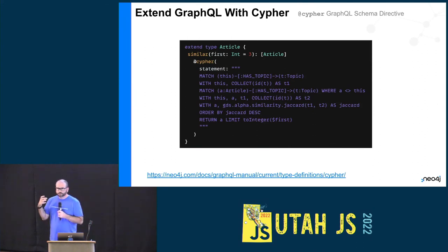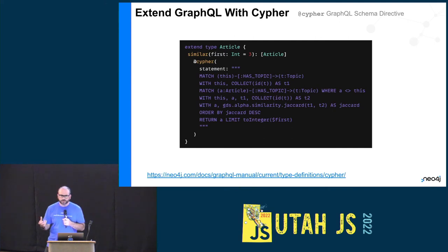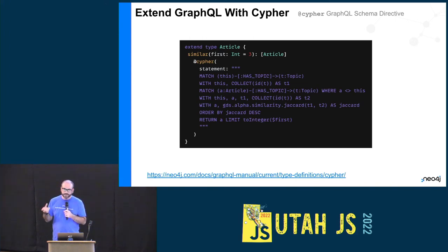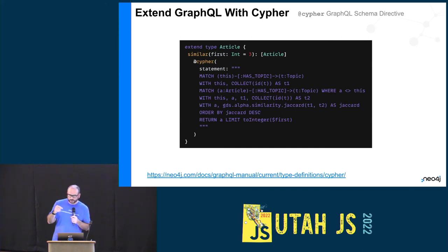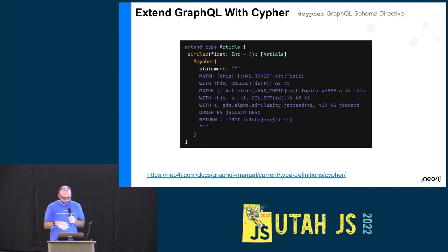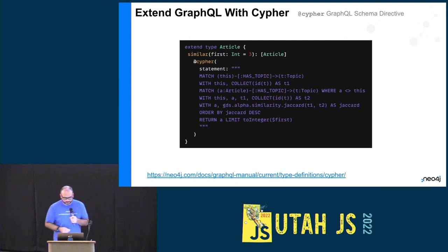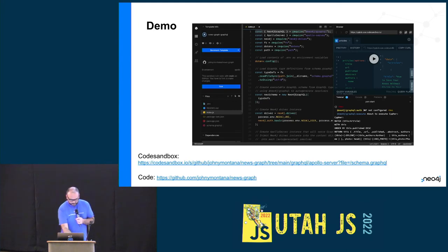That's great for basic CRUD functionality. For custom logic, we can always implement our own resolvers. But if we can express our custom logic as a Cypher query, we can leverage GraphQL's built-in extension mechanism — schema directives — and specifically one called 'Cypher,' which binds a field in the GraphQL schema to a Cypher query. In this case, we're adding a field on the Article type that uses graph data science to generate personalized recommendations: if you're reading this article, here are similar articles you might be interested in.